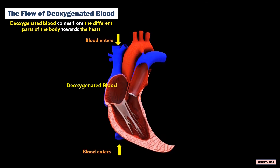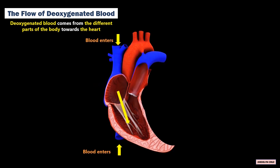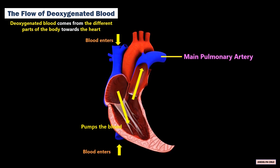The oxygenated blood moves from the right atrium to the right ventricle through the tricuspid valve. The right ventricle then pumps the blood to the main pulmonary artery, which connects to the lungs.